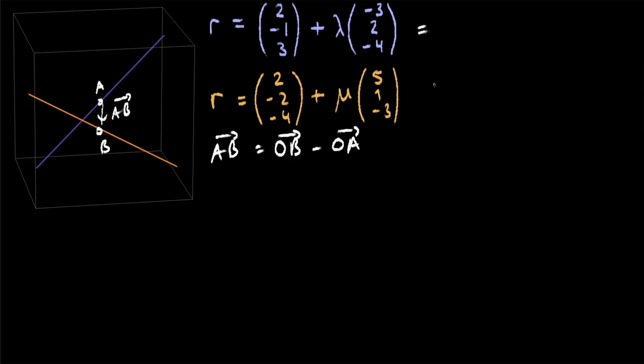To find the position vector of A, then we have to look at the purple line. We're given the equation, so all we have to do is group it together. We end up with 2 minus 3 lambda on the top. On the middle, we end up with minus 1 plus 2 lambda. And then on the bottom, we have 3 minus 4 lambda.